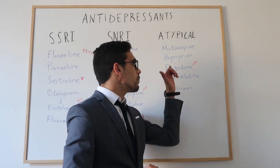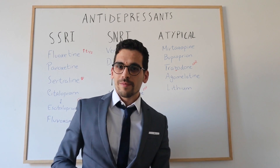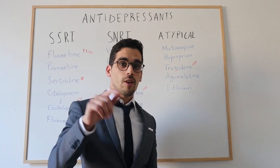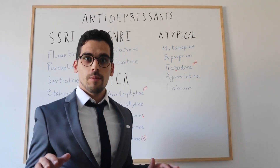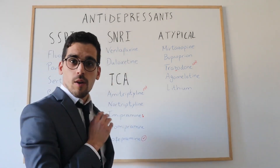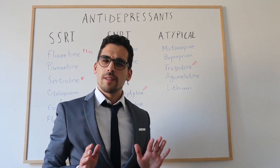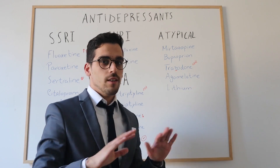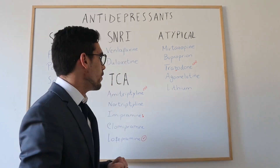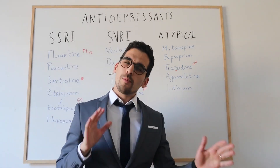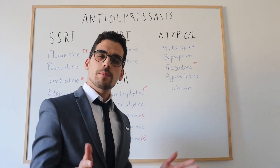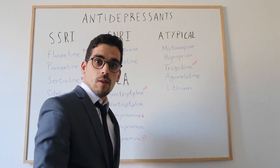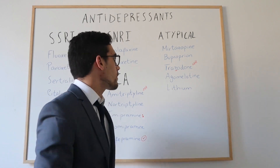Then we have bupropion. Bupropion is a dopamine and noradrenaline reuptake inhibitor. Unlike other antidepressants, it does not present any serotonergic effects — it does not affect serotonin at all. Because of that, bupropion is mainly used to help people quitting alcohol or quitting smoking.